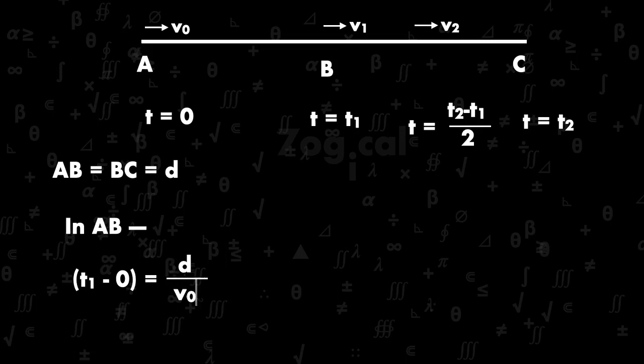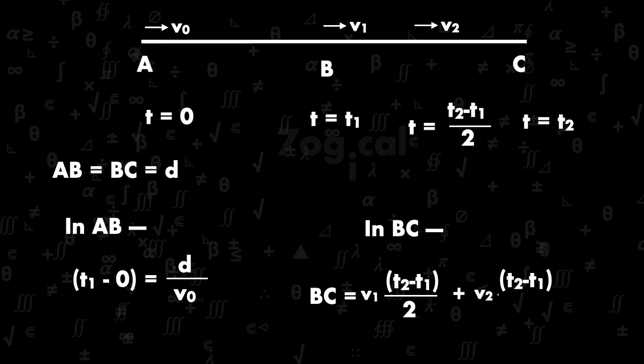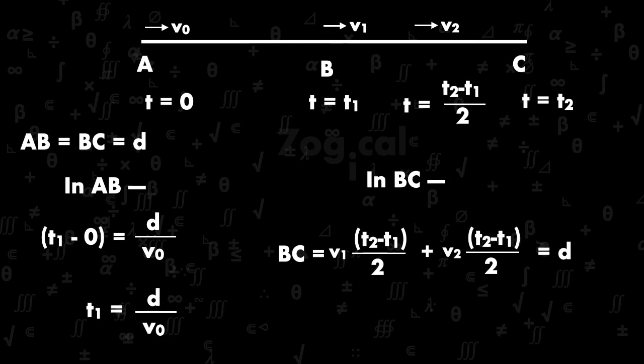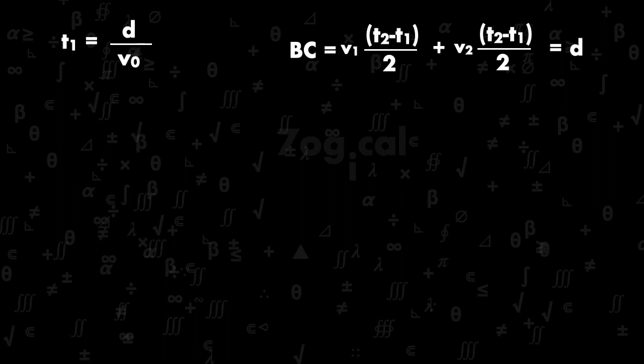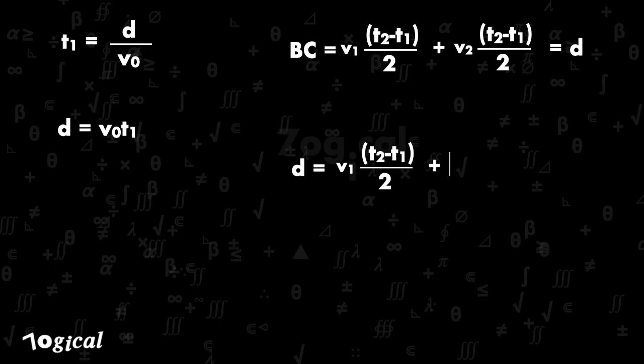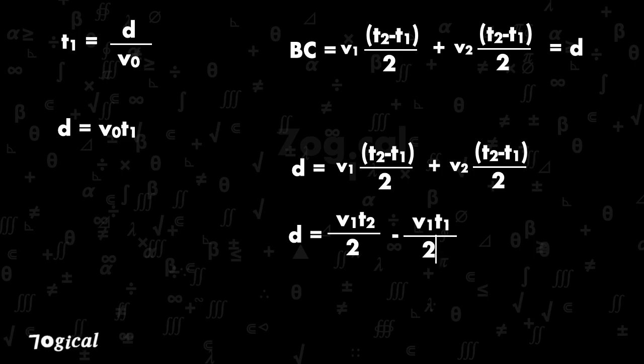In segment BC: BC = v1 * (t2 - t1) / 2 + v2 * (t2 - t1) / 2. So d = v1 * (t2 - t1) / 2 + v2 * (t2 - t1) / 2. Expanding: d = v1*t2/2 - v1*t1/2 + v2*t2/2 - v2*t1/2.